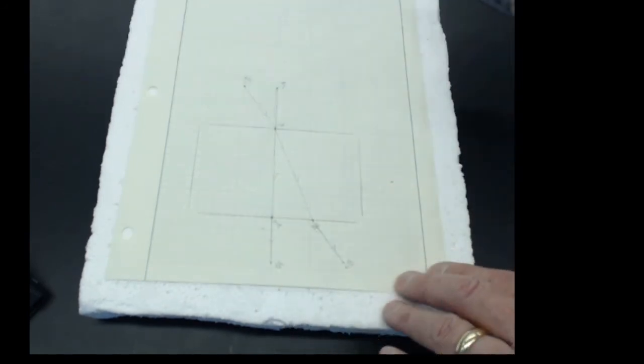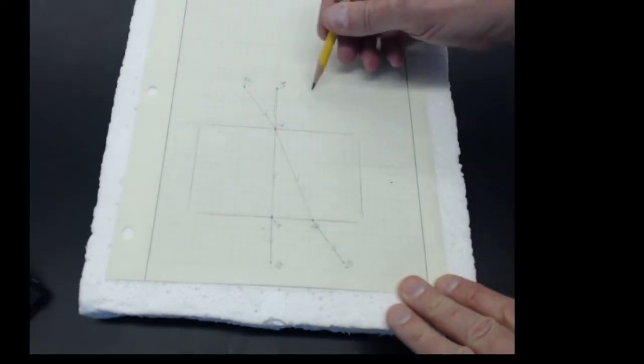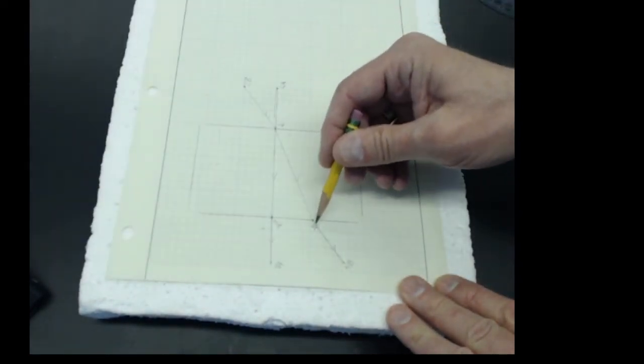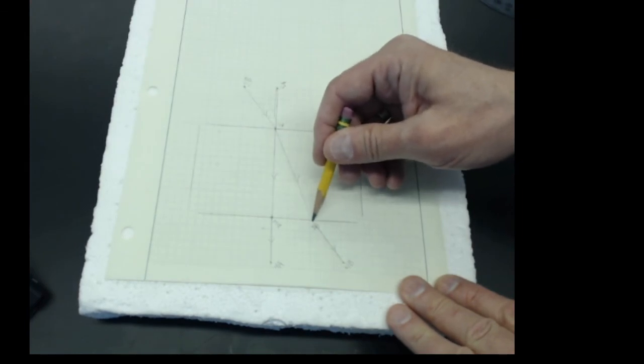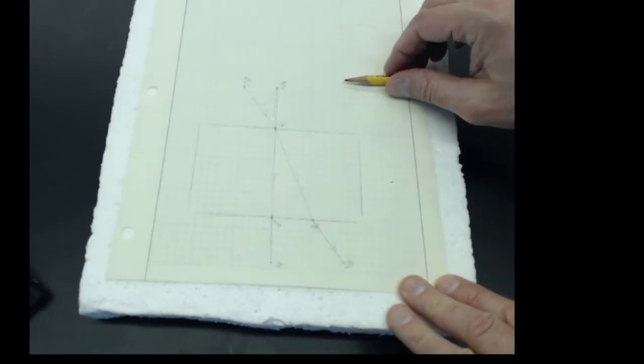And then what we'll do is we'll move pin 2 around to get various incident angles. And then we'll measure where to put pin 3 and pin 4 to measure the exit angle.